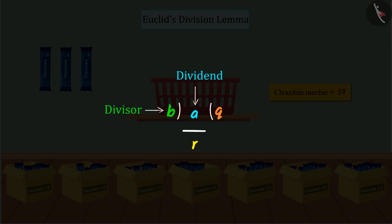We represent dividend by A, divisor by B, quotient by Q and remainder by R.